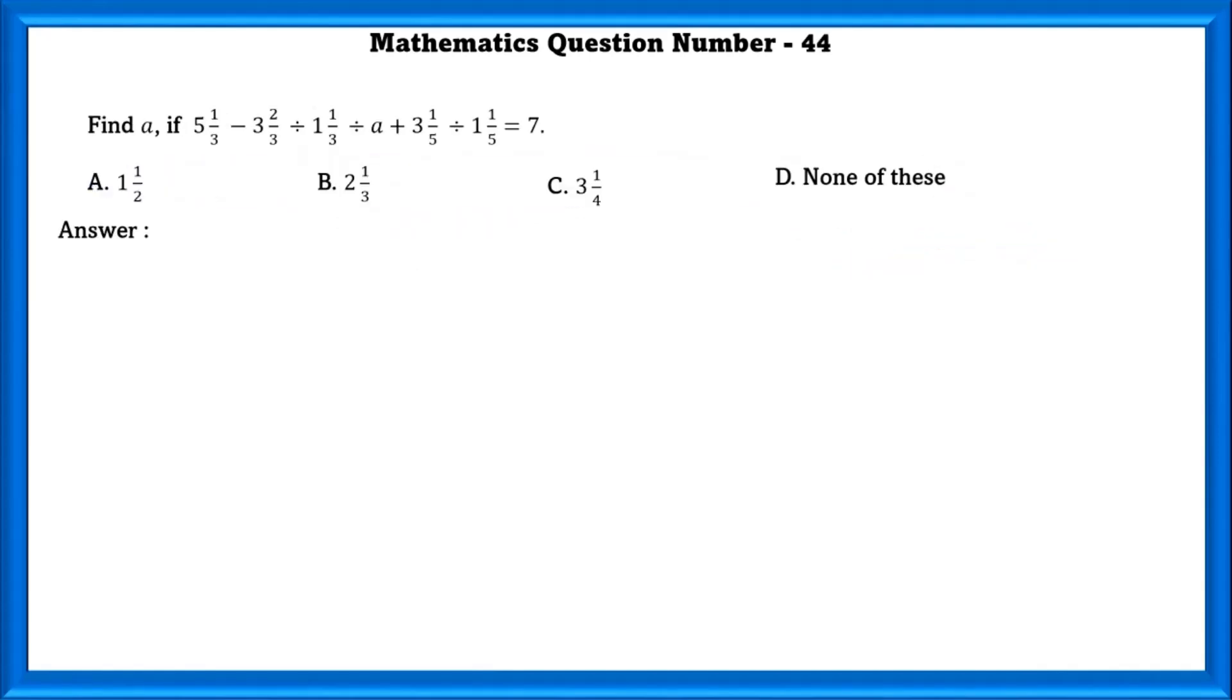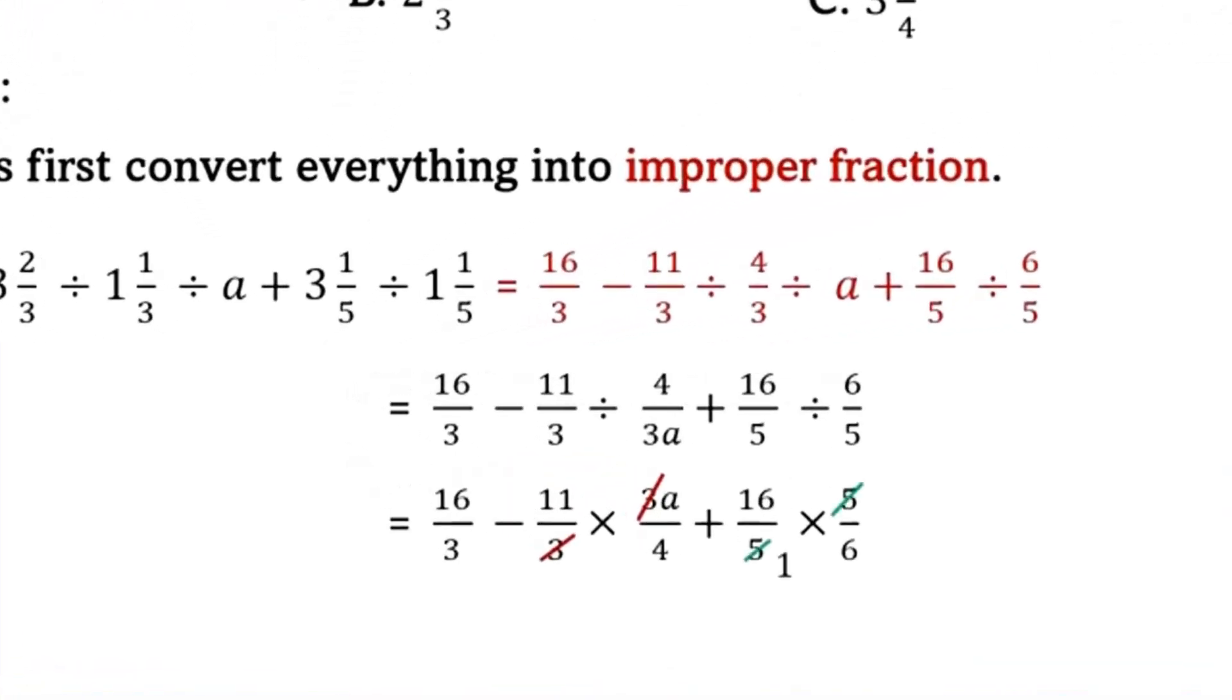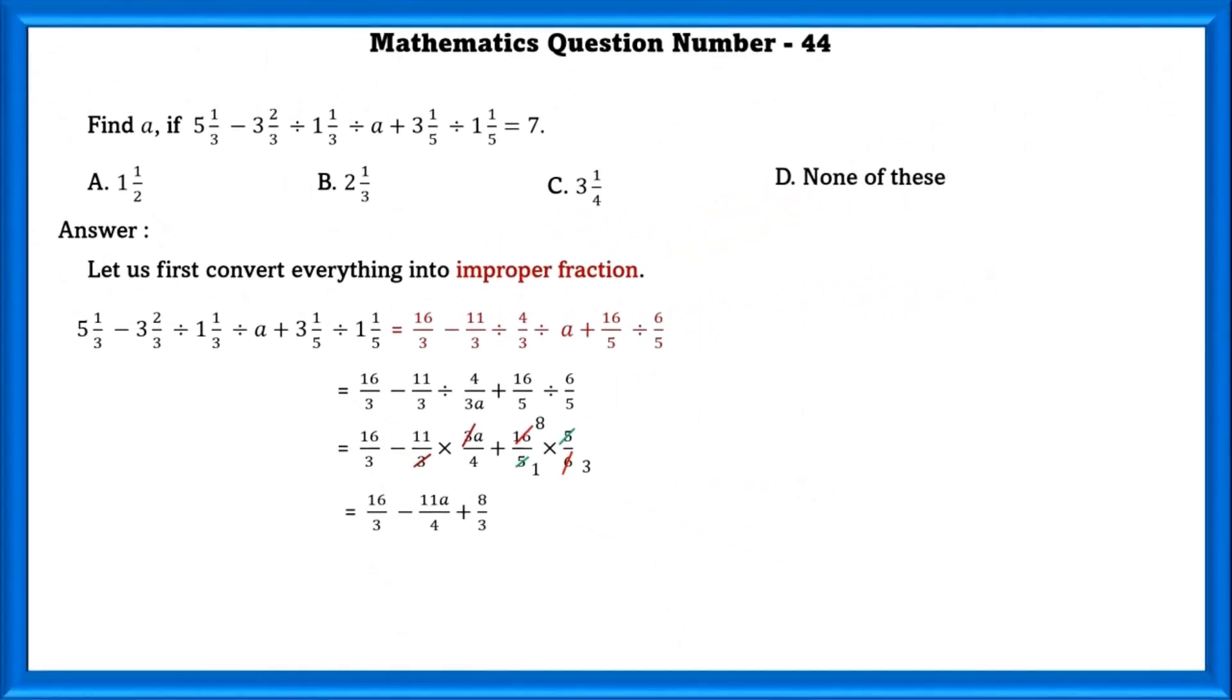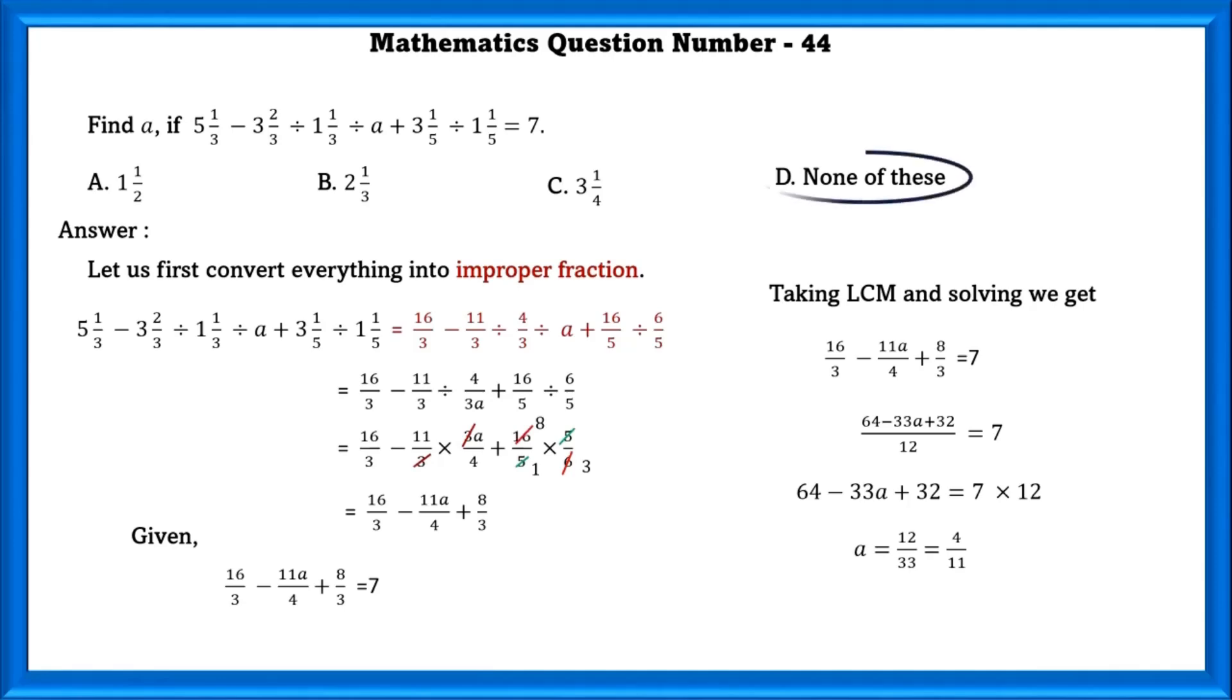Mathematics question number 44. Find a if 5 1 by 3 minus 3 2 by 3 divided by 1 1 by 3 divided by a plus 3 1 by 5 divided by 1 1 by 5 is equal to 7. Let us first convert everything into improper fractions. Now simplifying this, we will get 16 by 3 minus 11 a by 4 plus 8 by 3 which is equal to 7. Taking LCM, we get 64 by 33 a plus 32 by 12 which is equal to 7. We can simplify this and find the value of a that is 4 by 11 which there is no option for that. So, the answer is none of these.